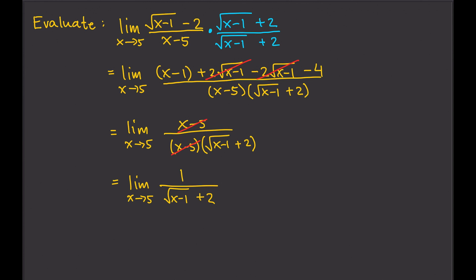Now we can plug in x equals 5: that's 1 over the square root of 5 minus 1 plus 2. The square root of 4 is 2, and 2 plus 2 is 4. So the answer is 1 over 4, or one-fourth. The limit of the square root of x minus 1 minus 2 divided by x minus 5 as x approaches 5 is one-fourth.